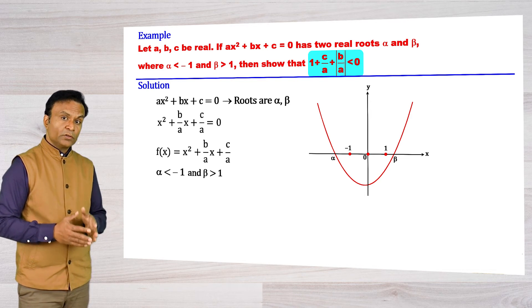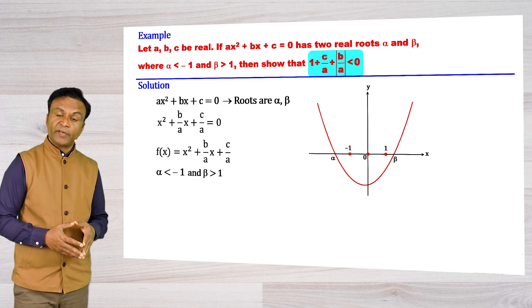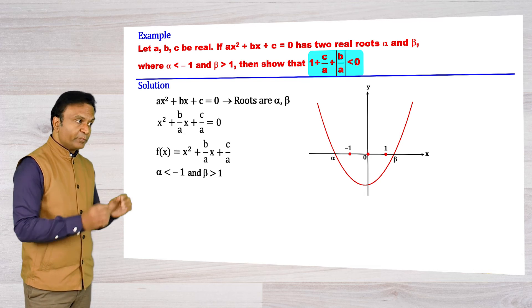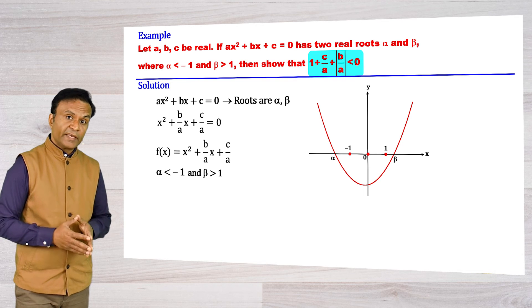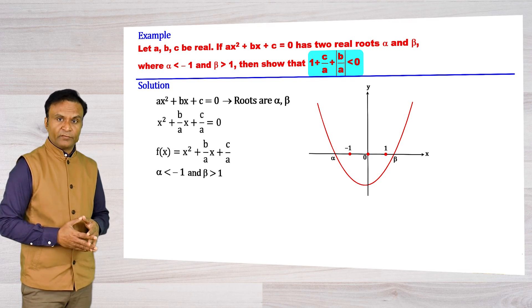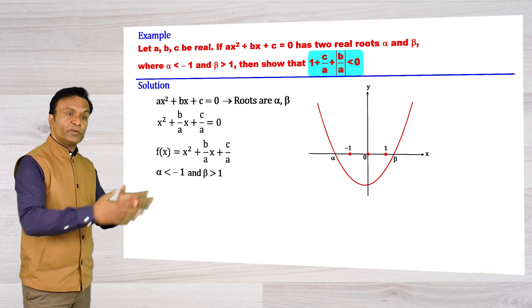We want roots to be like this: α less than -1, β more than 1, and we have placed -1 and 1 between the roots. But for that, some conditions are required; automatically -1 and 1 do not fall between roots.